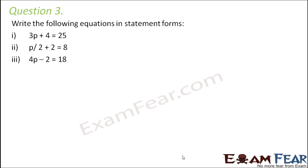Question number 3. Write the following equations in statement forms. So this is just the opposite thing now. The first one is 3p plus 4 equals 25. What are we actually doing here? We are adding 4 to 3 times p. So that means 4 added to 3 times p gives 25. Similarly, in the second one, we are adding 2 to half of p. So 2 added to half of p gives 8.